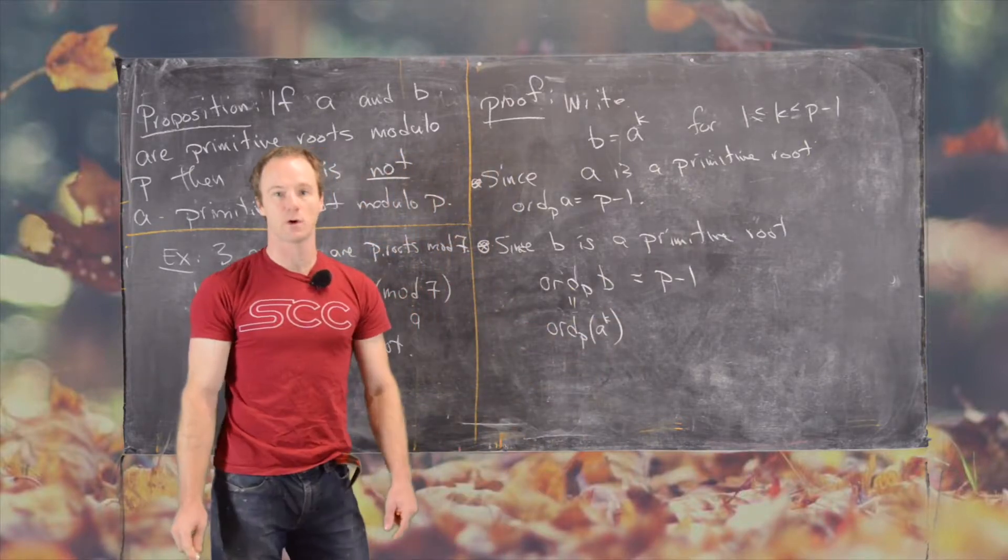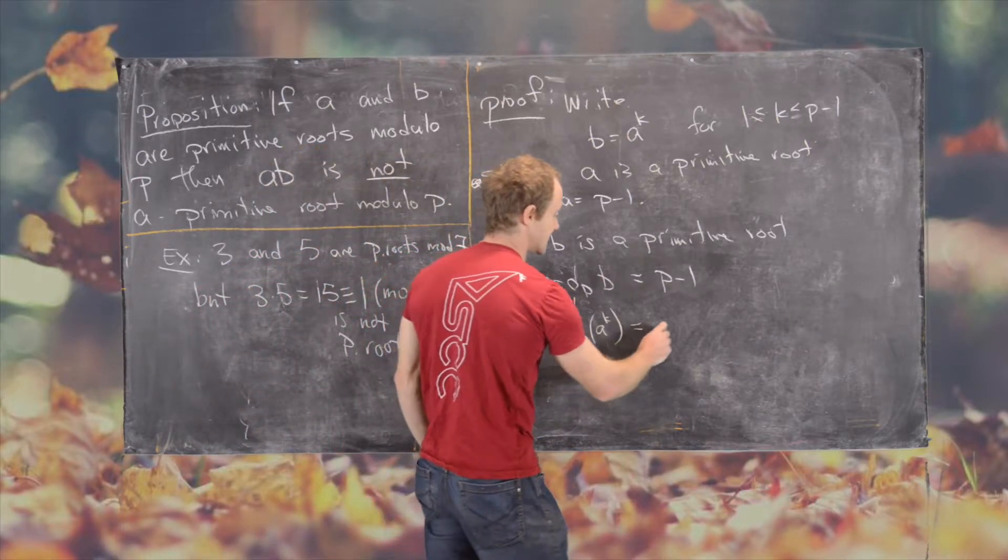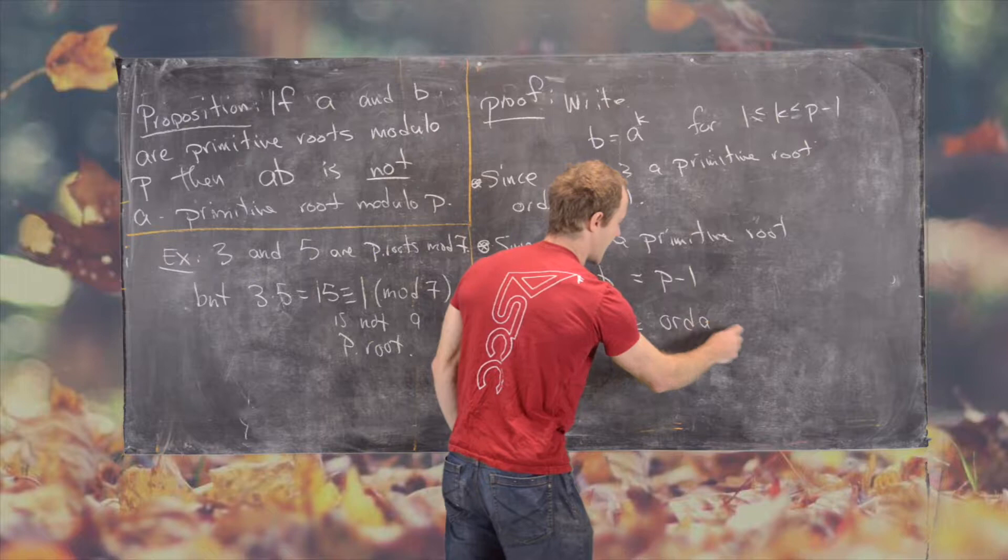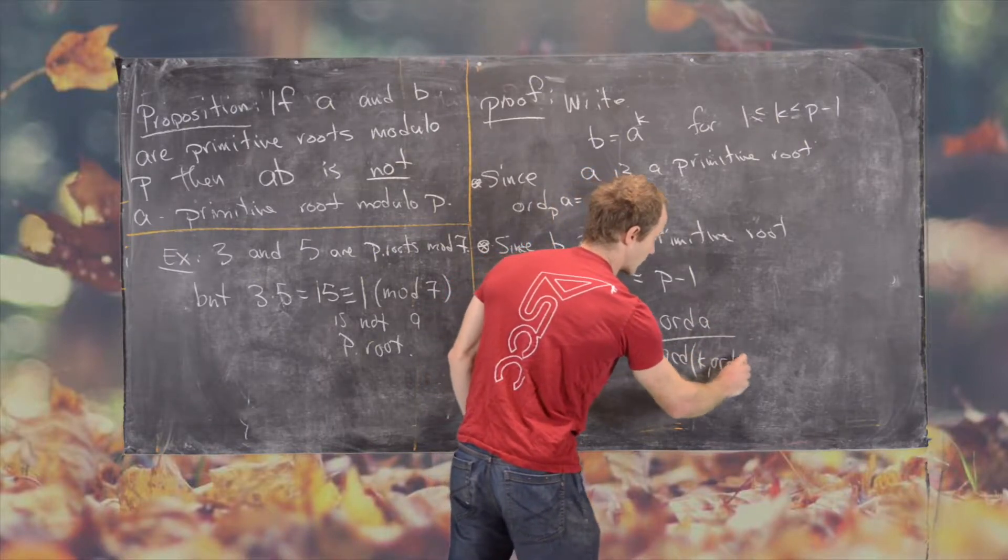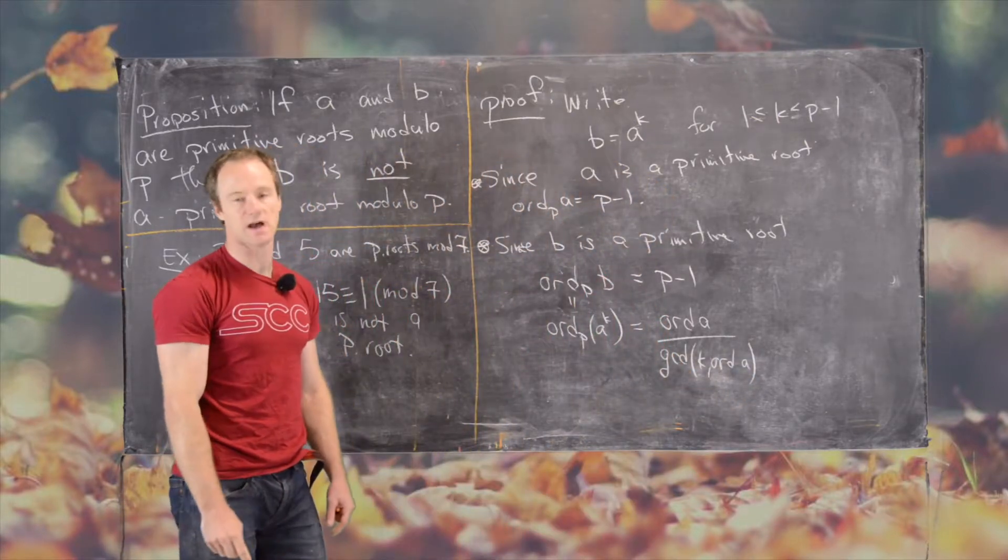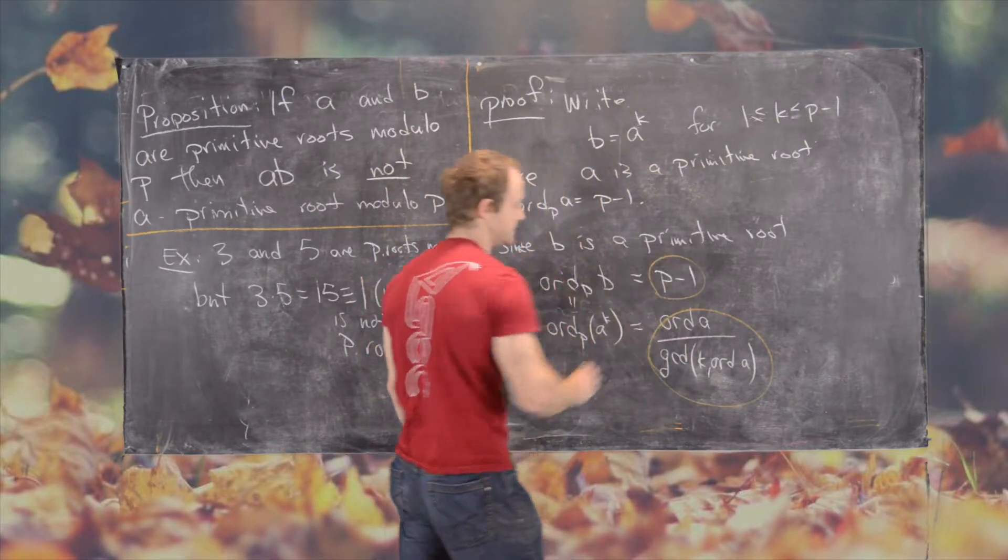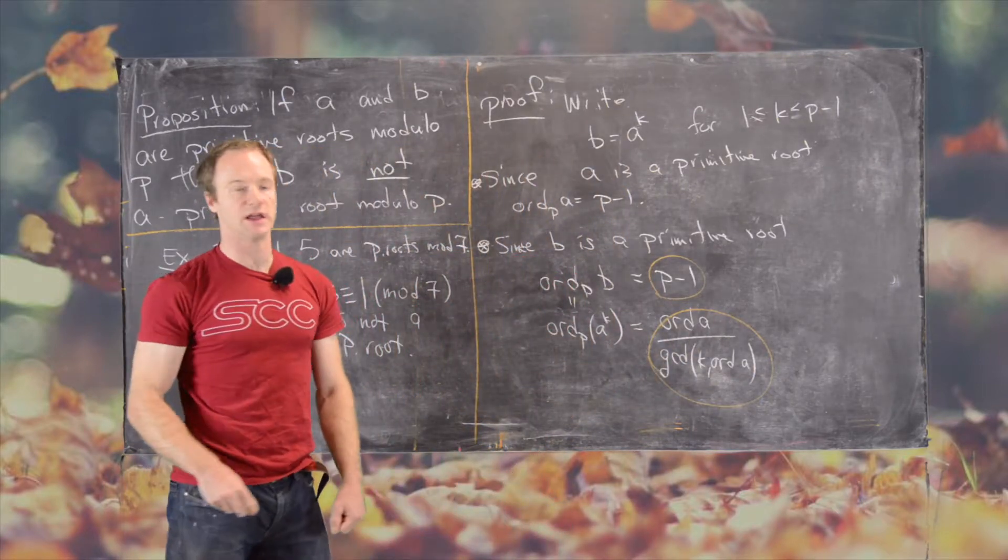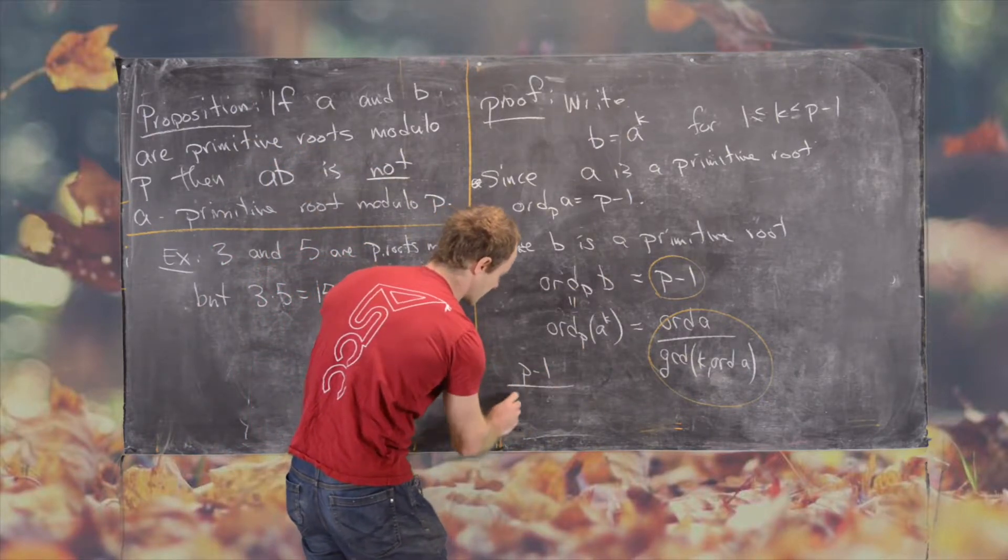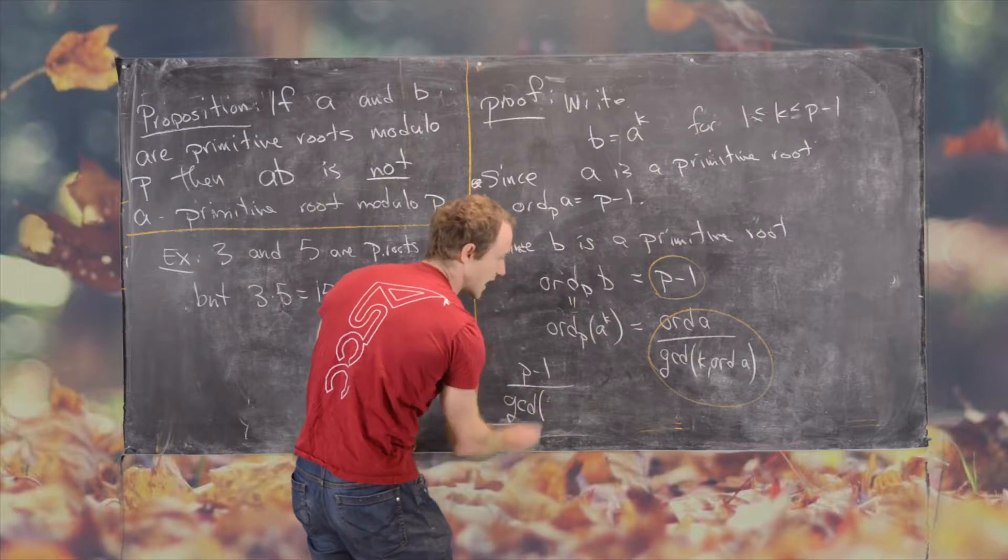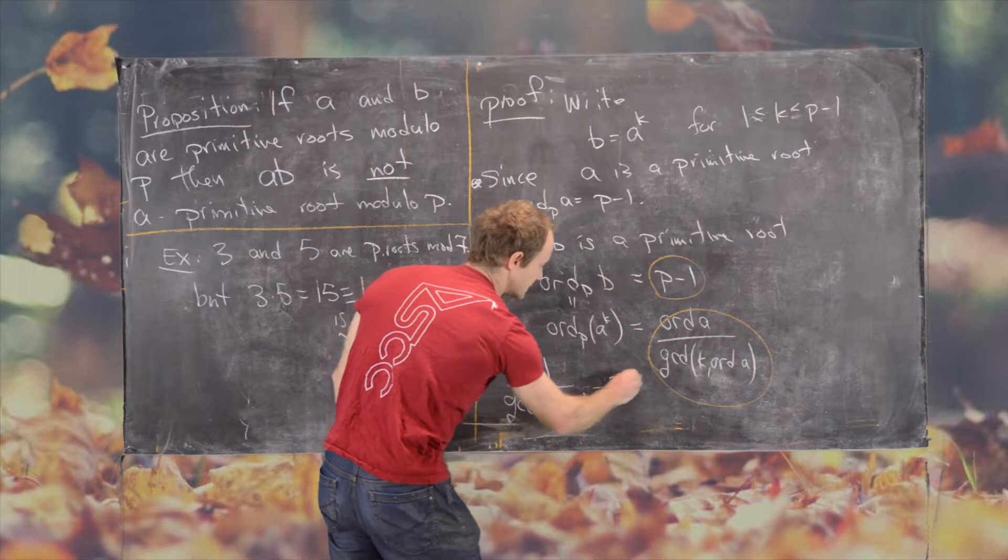But now we can use this formula for the order of a power of an element modulo P. And that is, this is equal to the order of A over the GCD of K and the order of A. So let's see where that gets us. So these two circles equated to each other tells us that P minus 1 over the GCD of K and P minus 1 must be equal to P minus 1.